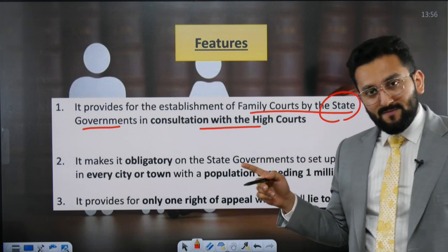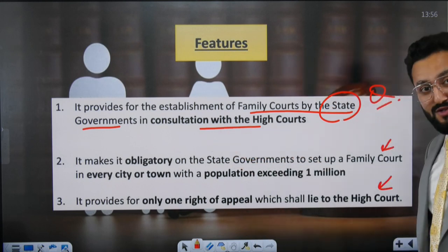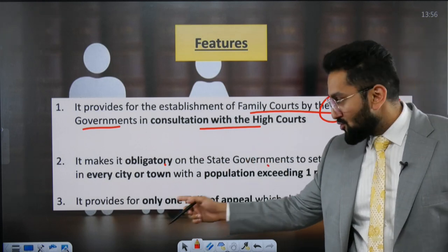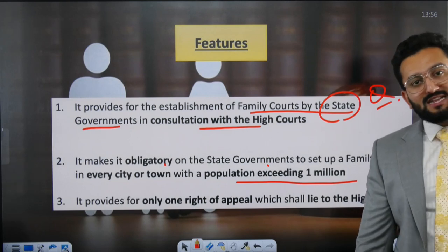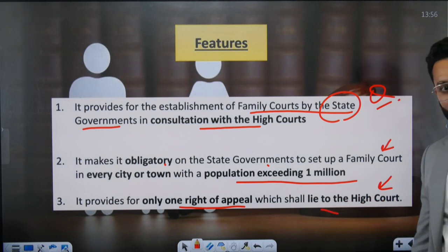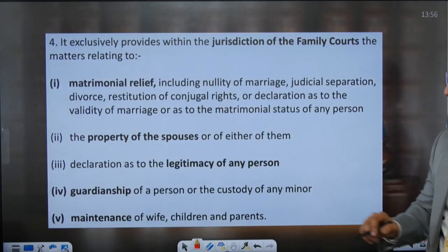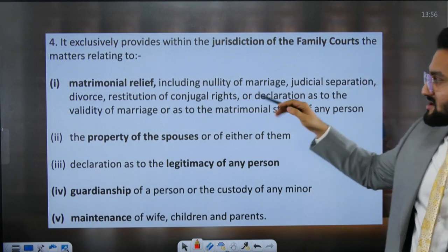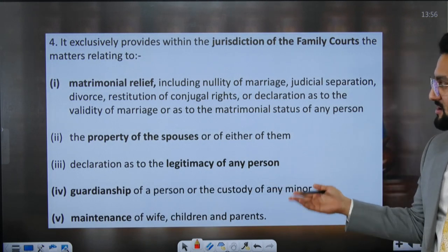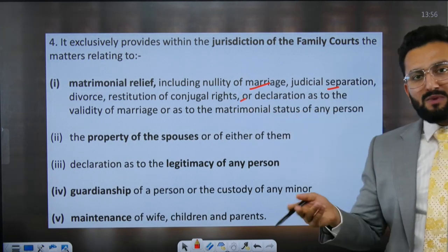A family court is constituted by the state government in consultation with the High Court — note: state government word is used here. The Act makes it obligatory on state governments to set up a family court in every city or town with a population exceeding 1 million. It provides only one right of appeal, which shall lie at the level of the High Court. Family court jurisdiction covers: property of spouses, legitimacy of any person, guardianship, maintenance of wife/children/parents, nullity of marriage, judicial separation, and conjugal rights.